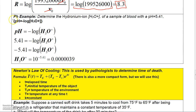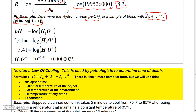pH is another example based on logarithms. The formula relates pH to the hydronium ion: pH equals negative the common log of the hydronium ion concentration. So given a particular pH value, can we find the hydronium ion concentration?